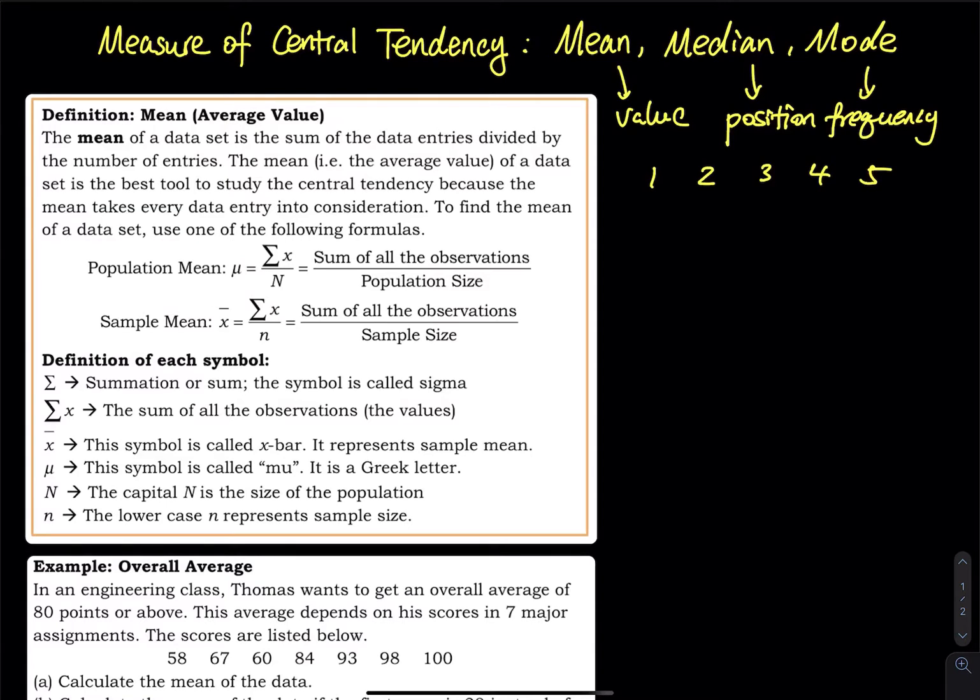So how do you find the mean? First we add them up: one plus two plus three plus four plus five. We have five values, so we divide by five. That equals fifteen, divided by five, which equals three. So three is the mean of this data set.